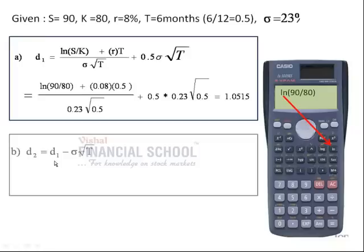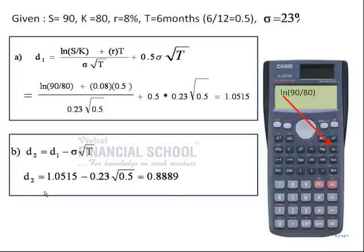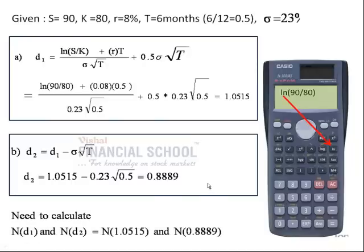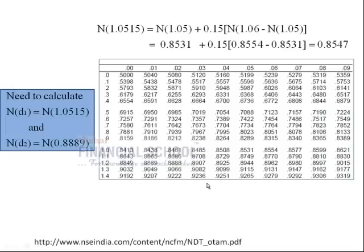To calculate d2 value, d1 minus root of T times standard deviation. When we extrapolate these numbers, we get d2 as 0.8889. Now we have to calculate N values of d1 and d2. This is the log normal distribution table that you get.